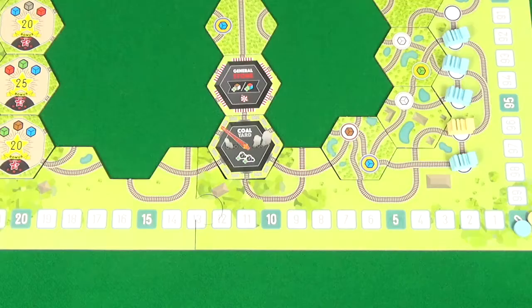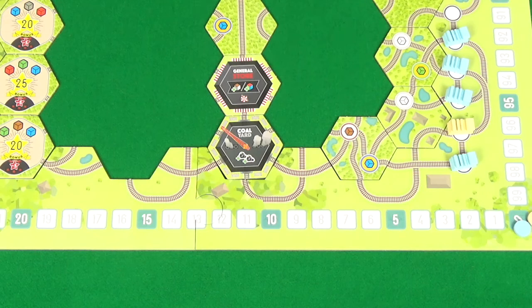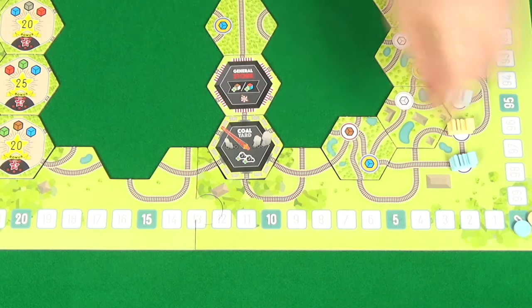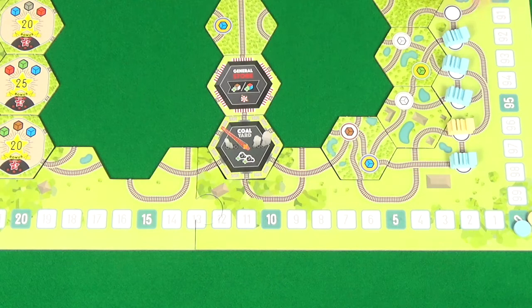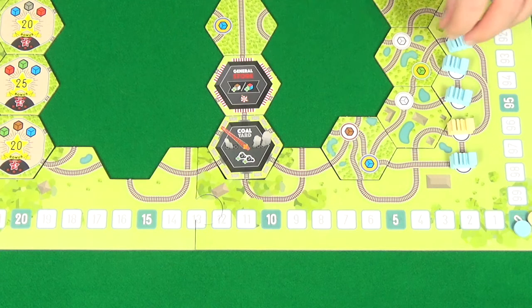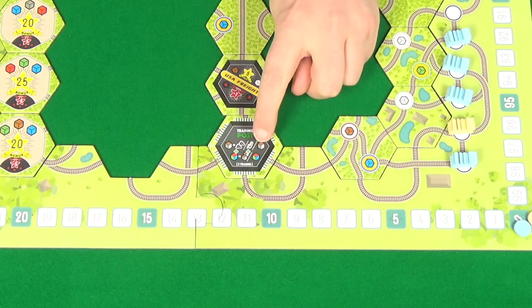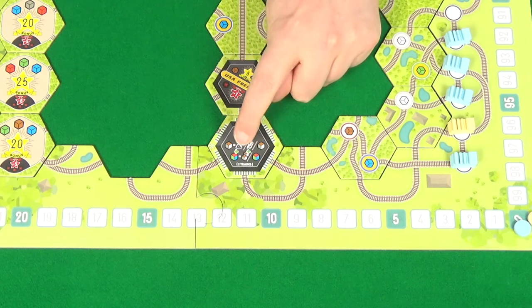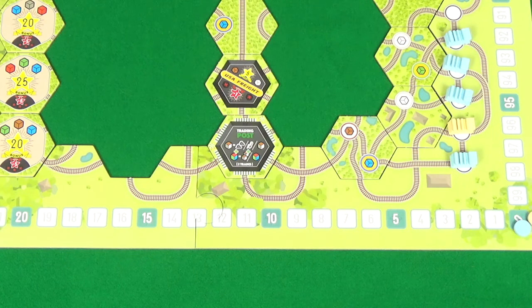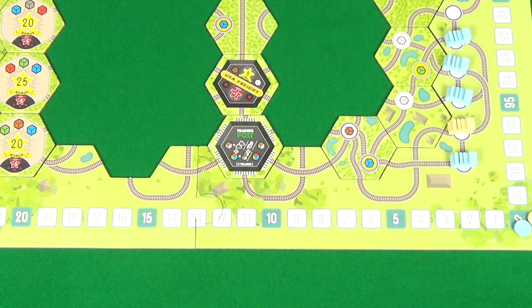So finally, I just want to cover what each of these special tiles does. So we've gone through the towns and how they work. There's also this coal yard. When you move a train to the coal yard, you'll immediately take two coal tokens. When you go on to the general store, you'll immediately take either one common resource or one rare resource of your choice. Then the trading post here will allow you to do two trades. You can either trade a common resource for two coal or a whistle or a different common resource. Or you can trade any one rare resource for two common resources or a different rare resource.